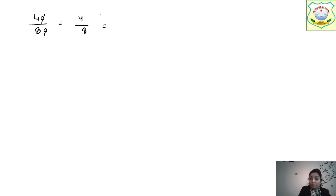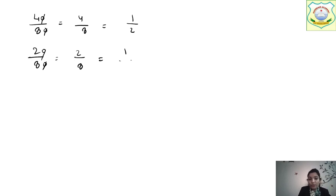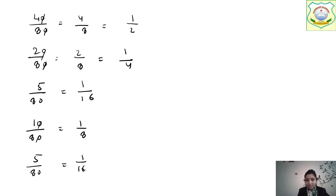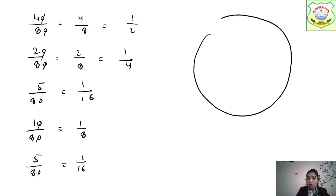Simplifying: 40/80 = 1/2 (rice); 20/80 = 1/4 (wheat); 5/80 = 1/16 (jowar); 10/80 = 1/8 (bajra); 5/80 = 1/16 (gram). Go to a blank page and work these out.